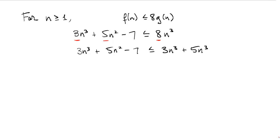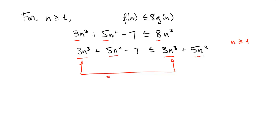Now we can compare the two expressions term by term. Each expression has a 3n³ term, which are equal. Looking at the two terms with coefficient 5: the term on the left is an n² term, and the term on the right is an n³ term. Since n is greater than or equal to 1, we know that n³ is greater than or equal to n², so the 5n² term on the left is less than or equal to the 5n³ term on the right.